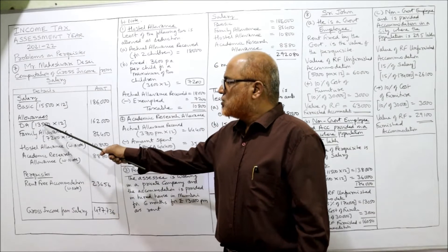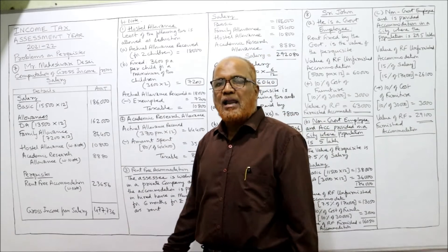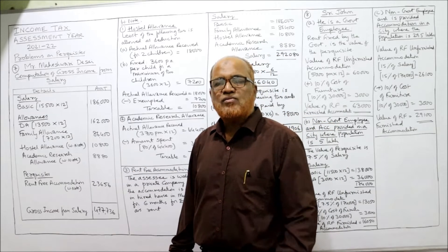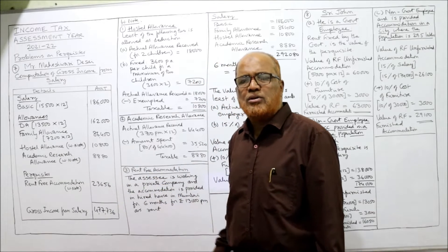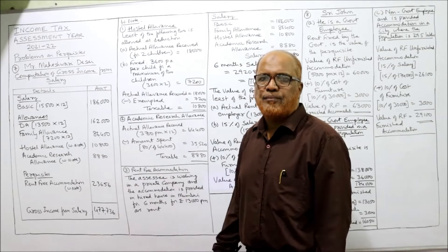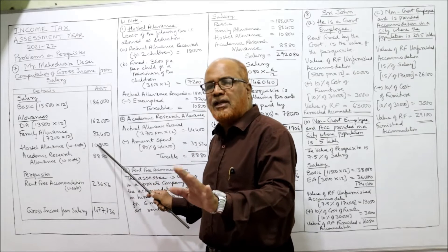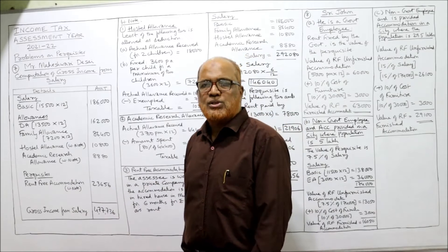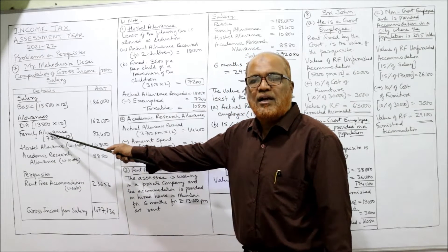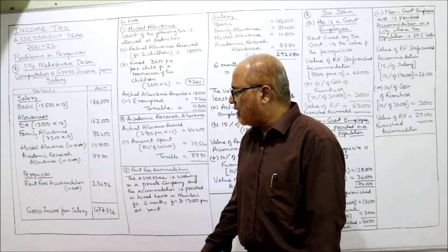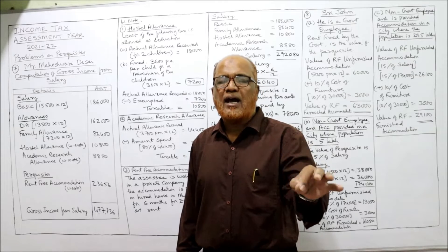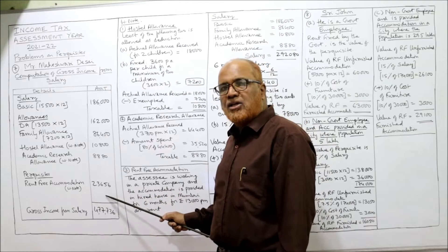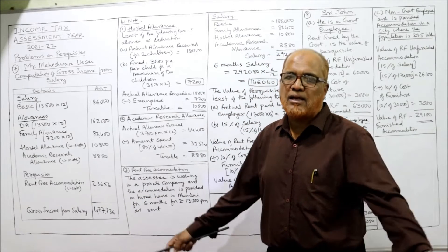For hostel allowance and academic research allowance, write them with a working note bracket — leave the amount blank and calculate in working notes. There are four allowances: DA, family allowance, hostel allowance, and academic research allowance. The perquisite — rent-free accommodation — also goes in working note. After calculating all, the total will be gross income from salary.